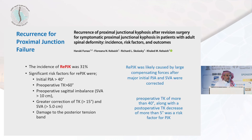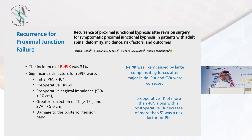A paper by Key discussed the recurrence of proximal junctional failure. Even after surgery for junctional failure, there is a 31% chance of recurrence. Most importantly, large compensatory forces after major initial sagittal balance correction are corrected — so if you overcorrect the spine, you end up having problems. Also, if you have high thoracic kyphosis that you overcorrect, pay attention: there is a good chance of failure.